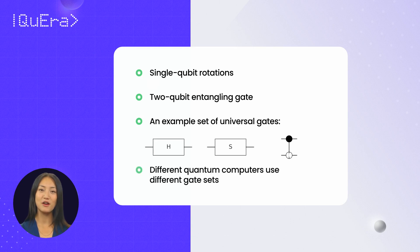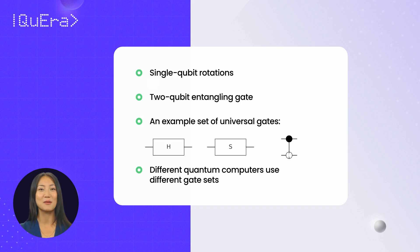Different quantum computers use different gate sets, but if these sets are universal, any algorithm can be performed.